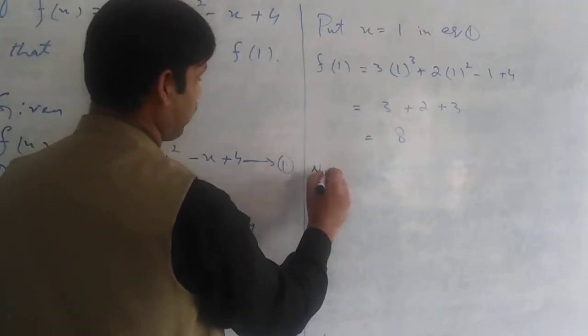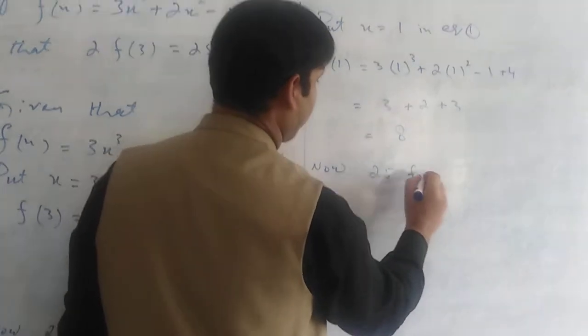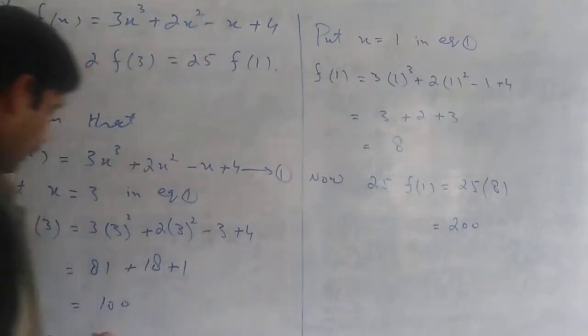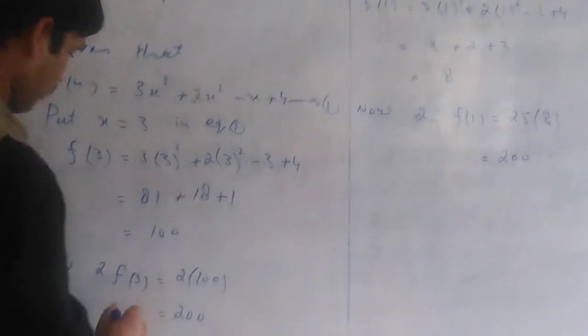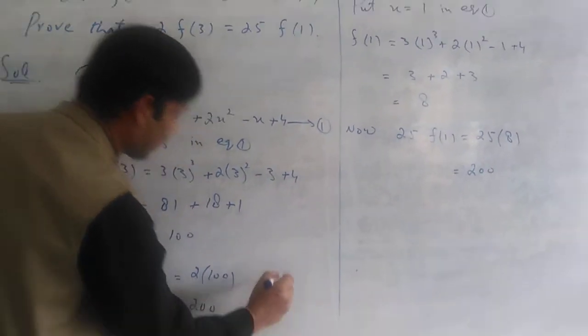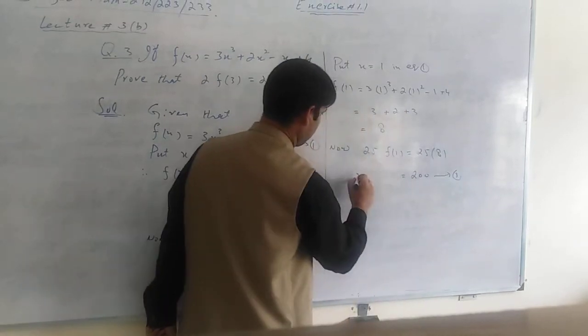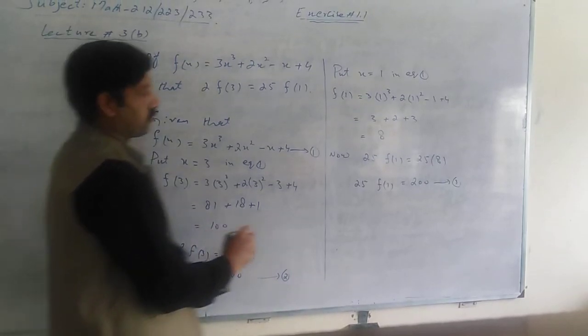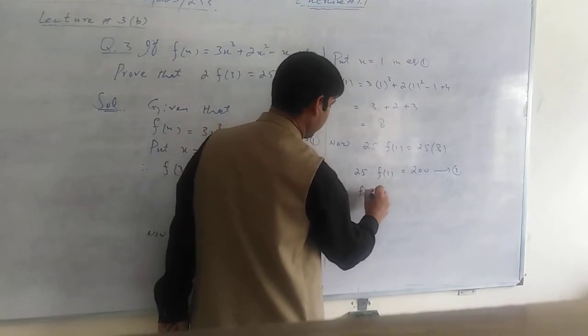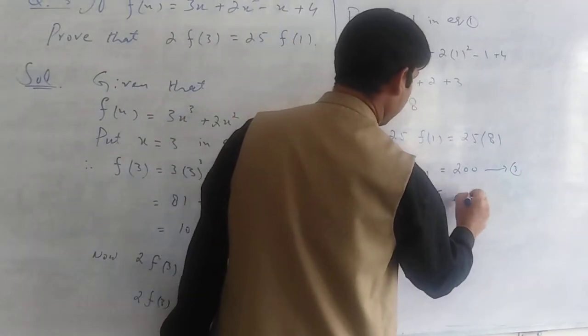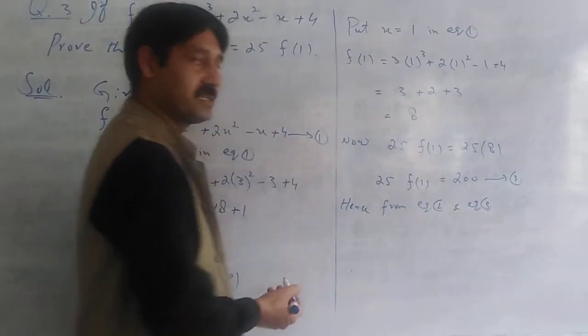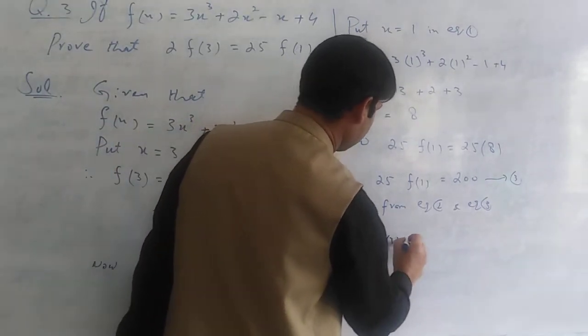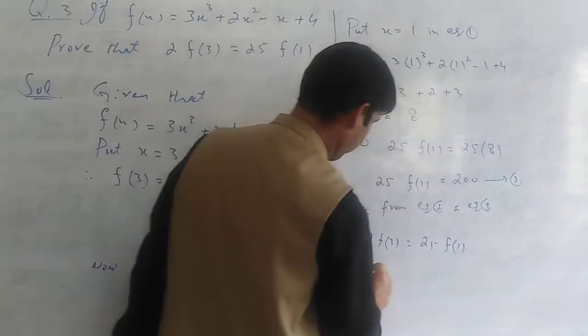f of 1 is equal to 3 into 1 cube plus 2 into 1 square minus 1 plus 4, which becomes 3 plus 2 minus 1 plus 4. This is equal to 8. Now 25f of 1 equals 25 times 8 which is also equal to 200. So from equation number 2 and equation number 3, left hand side equals right hand side. 2f(3) equals 25f(1). Proved.